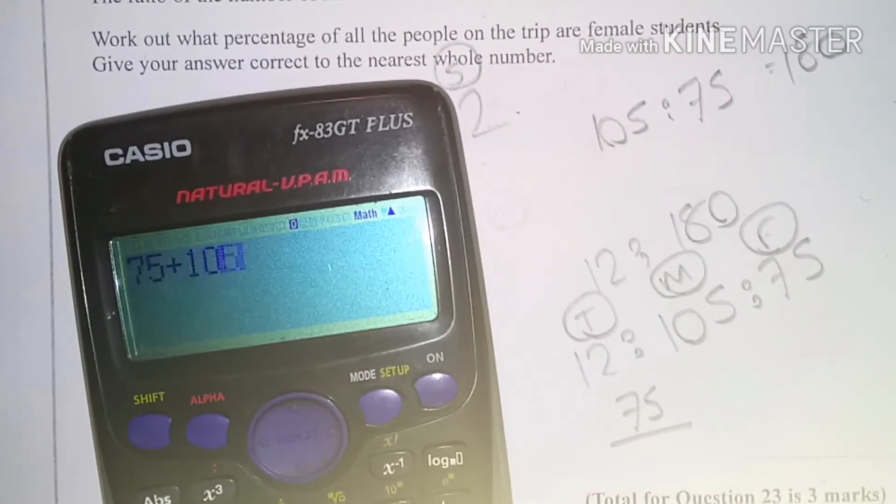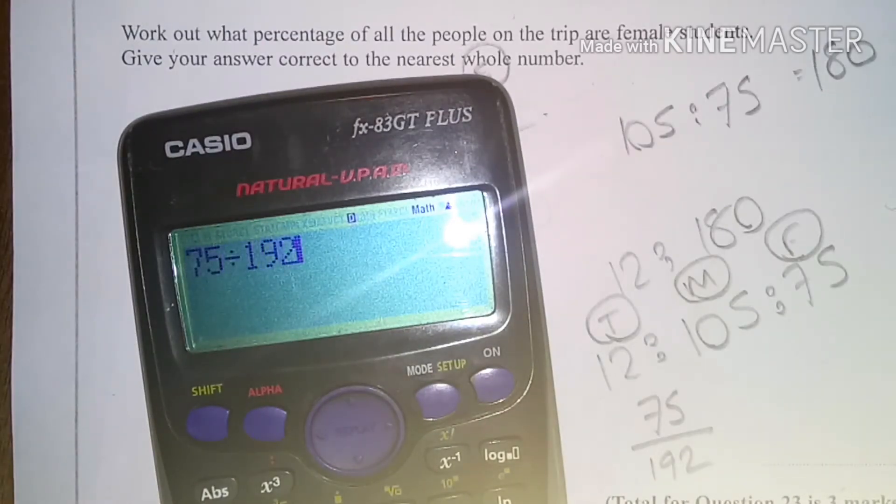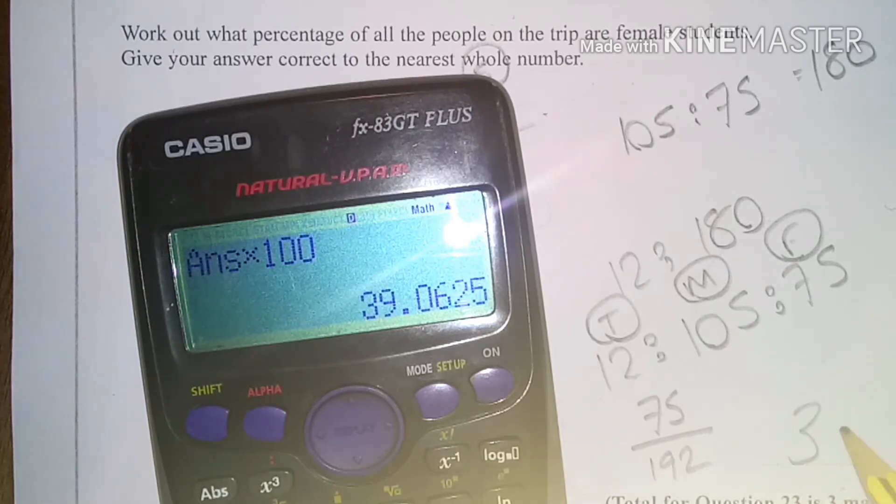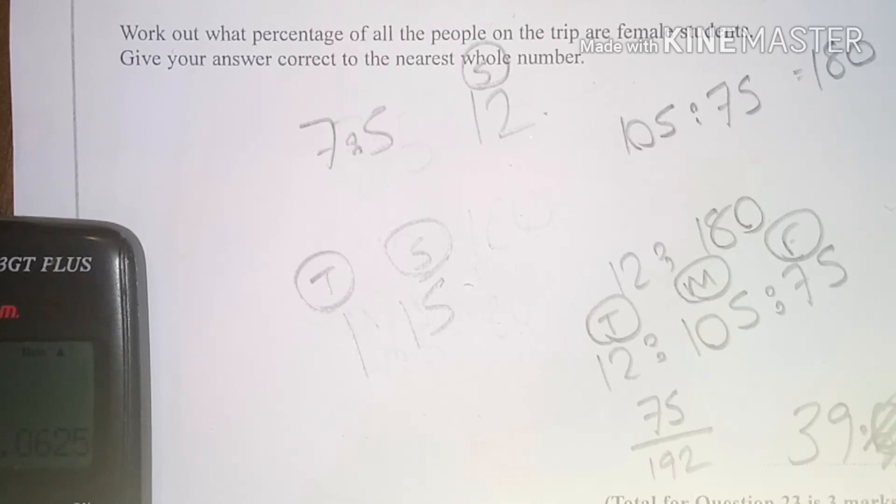75 divided by 192 is 25 over 64, times by 100. I press standard mode, my answer is 39.0625. But it does say give your answer to the nearest whole number, so my answer is actually 39.